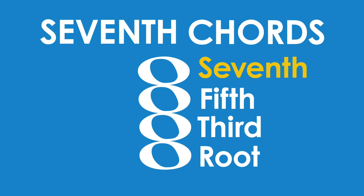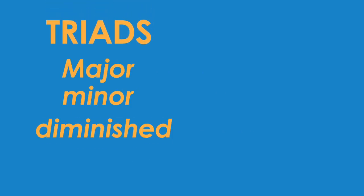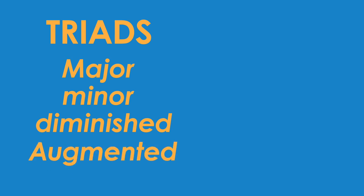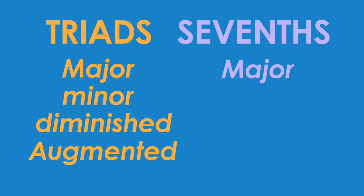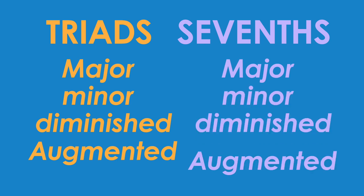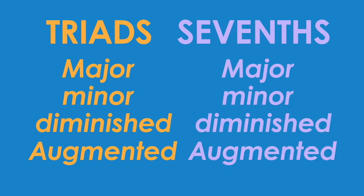We learned last time that there are four different kinds of triads: major, minor, diminished, and augmented. And in the intervals video we learned that the interval of a seventh can also be major, minor, diminished, or augmented.